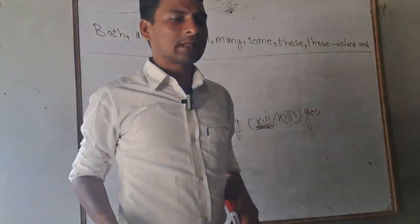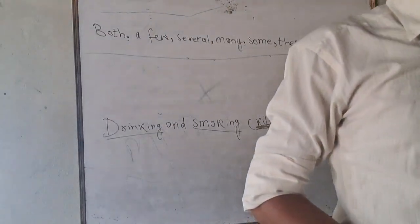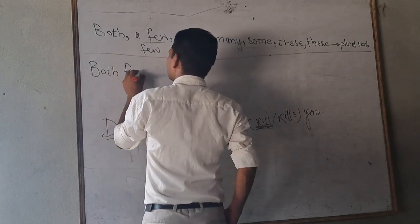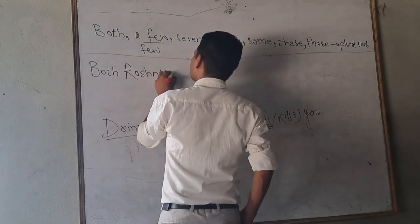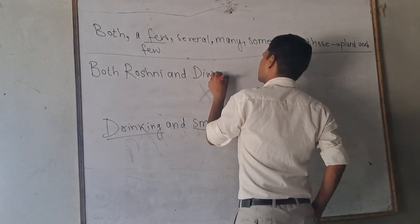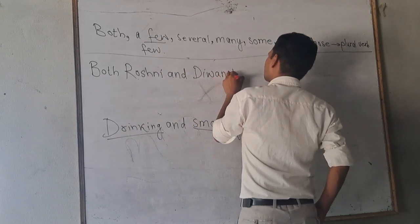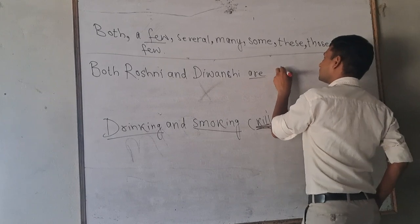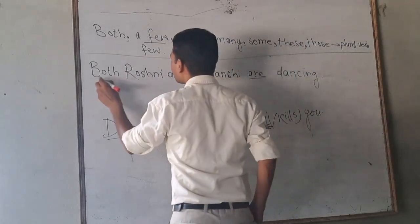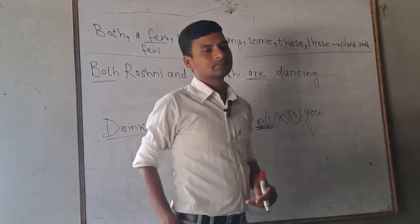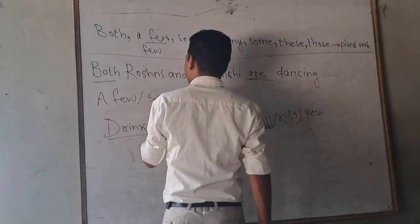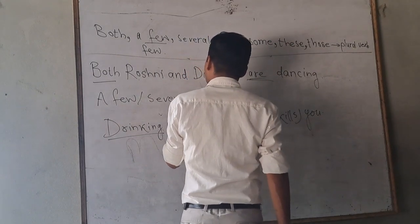Both of you, several, many, these, those - both Roshni and Devansi are dancing. Here you see here both, so are.